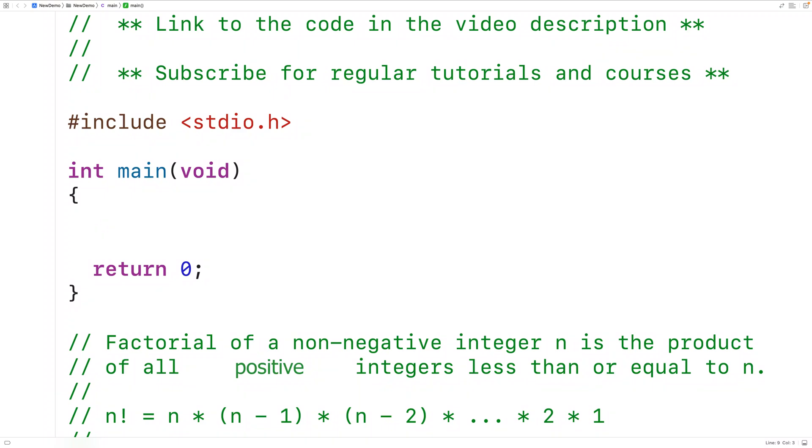In this video, we're going to learn how to calculate the factorial of a number with a loop using C. Using a loop to calculate the factorial of a number is considered an imperative solution to the problem. There are other ways to solve the problem, such as using recursion.